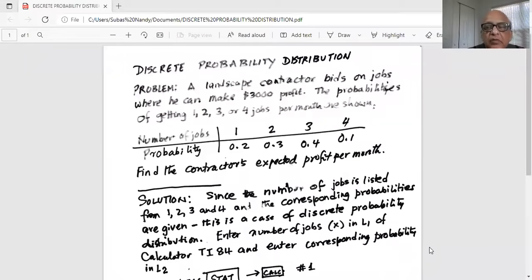So this is a discrete probability distribution problem. The problem states a landscape contractor bids on jobs where he can make $3,000 profit per job. The probabilities of getting one, two, three, or four jobs per month are shown.